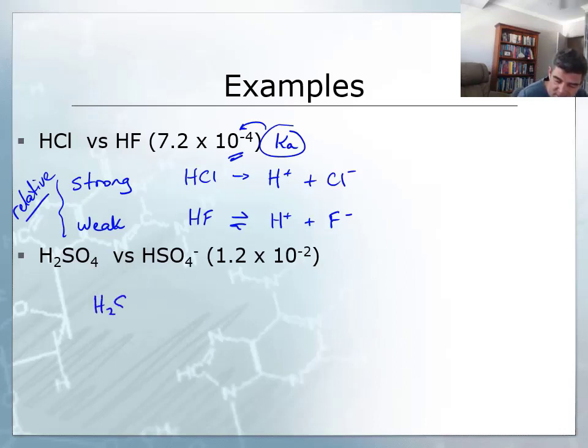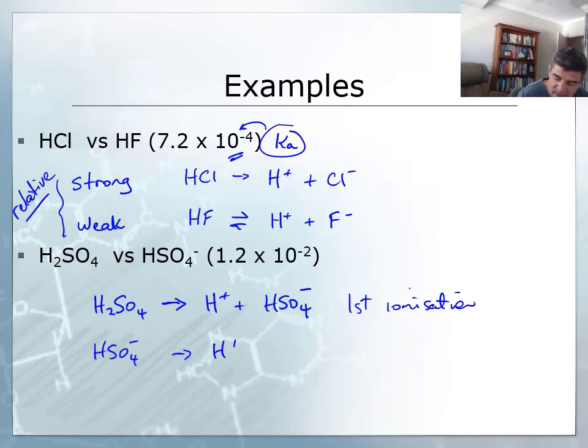Sulfuric acid is another acid that we know is a very strong acid, but when it ionizes it ionizes to H+ and HSO4-. So this is what we call the first ionization. And the HSO4- itself is capable of acting as an acid and creating an H+, HSO4-, and an SO42-. And you might think this is the second ionization.